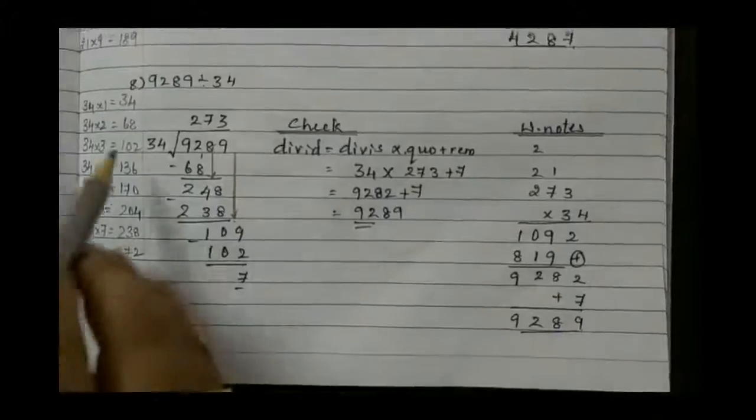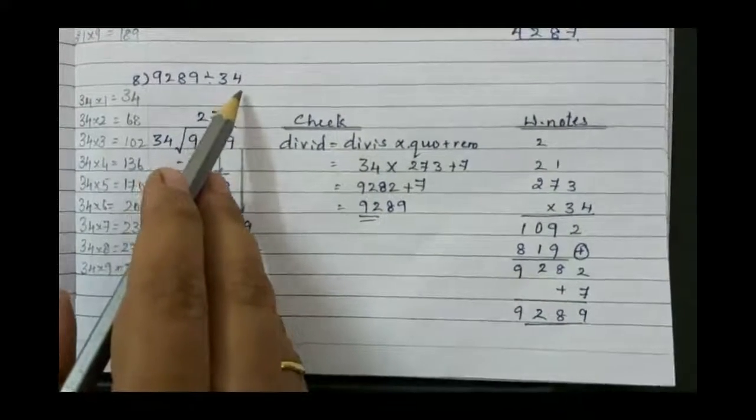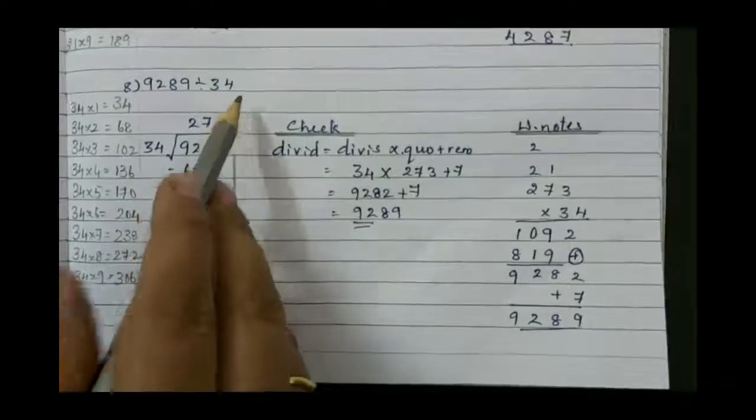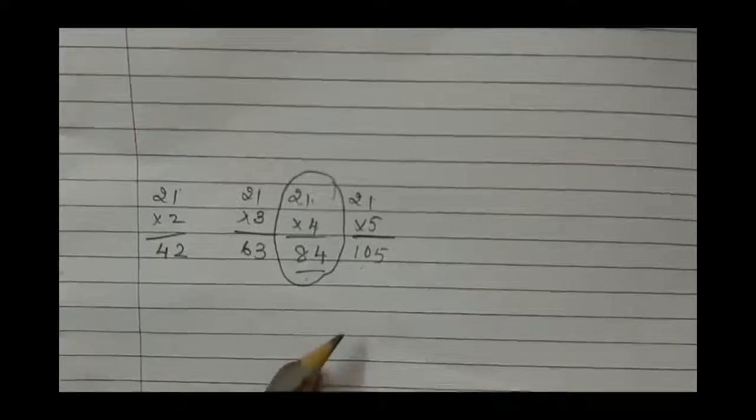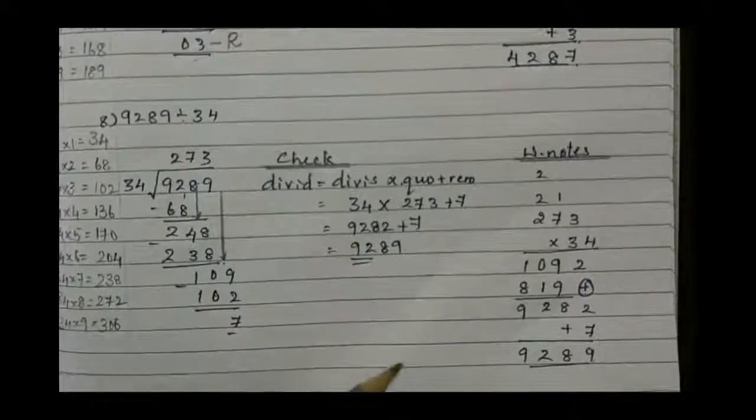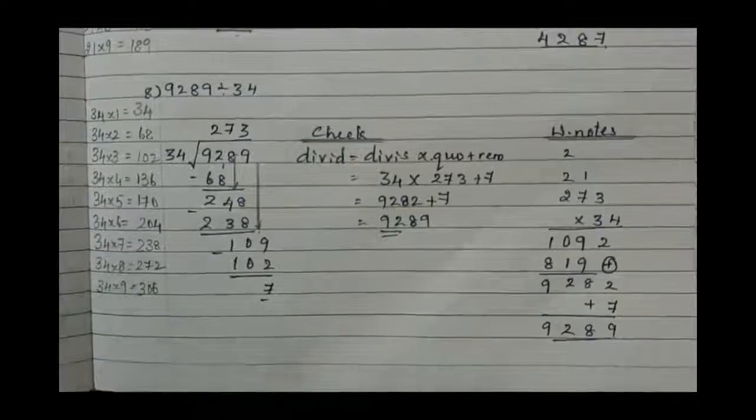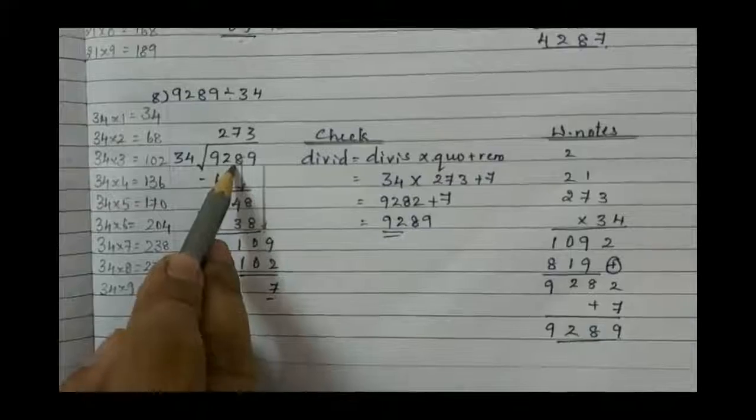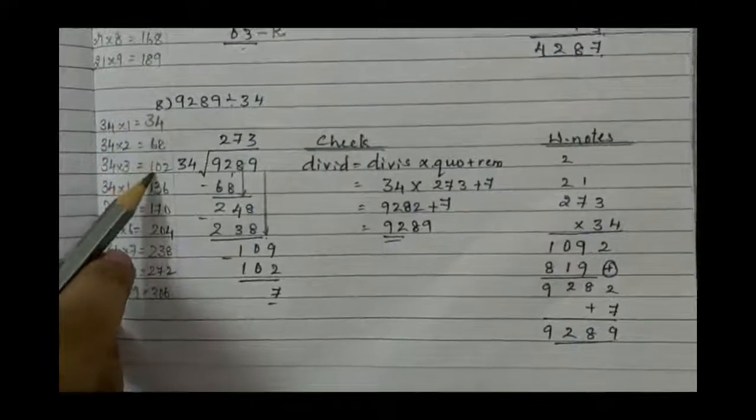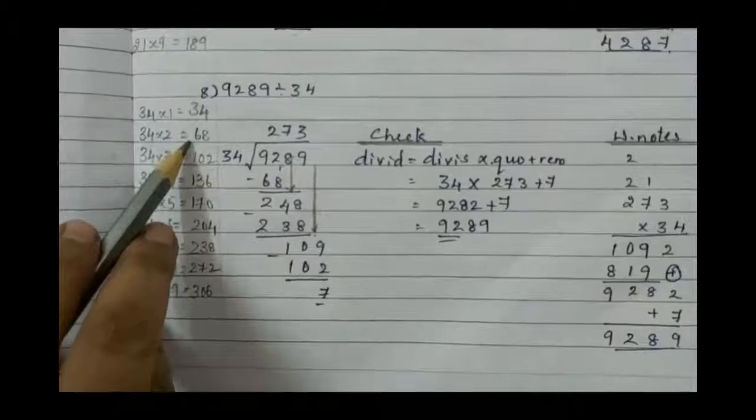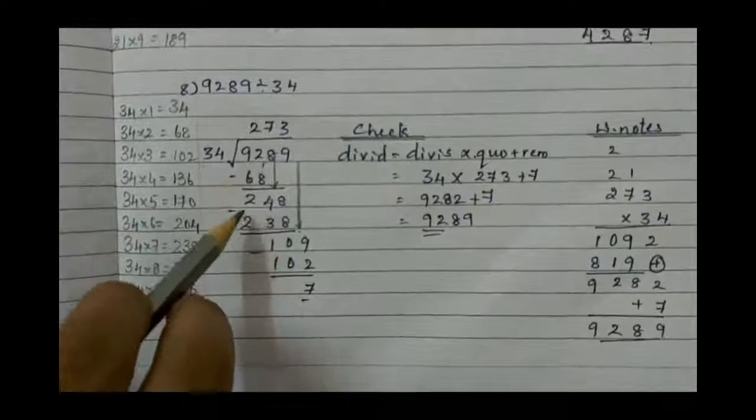Question number 8: 9,289 divided by 34. You should know table 34. If you don't know, go by multiplication method as shown in the above question. Do in the same way and find the answer. For your convenience, I have written the table beside, but don't copy, try to learn how to find out. So 34, how many is our 92? There is not 92. Take lesser than that: 34, 68, 102 is more. Take 68. 34 into 2 gives 68. If you subtract, you get 24.